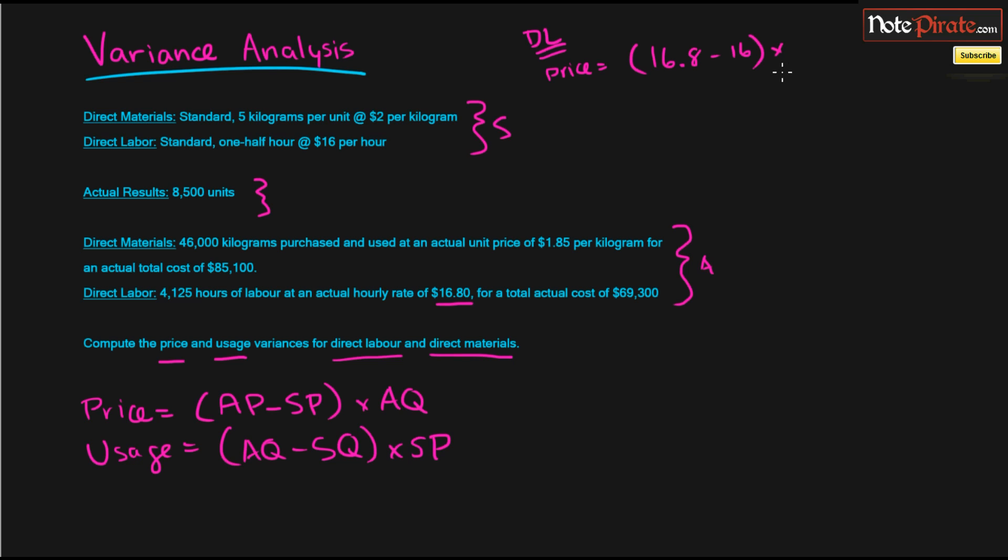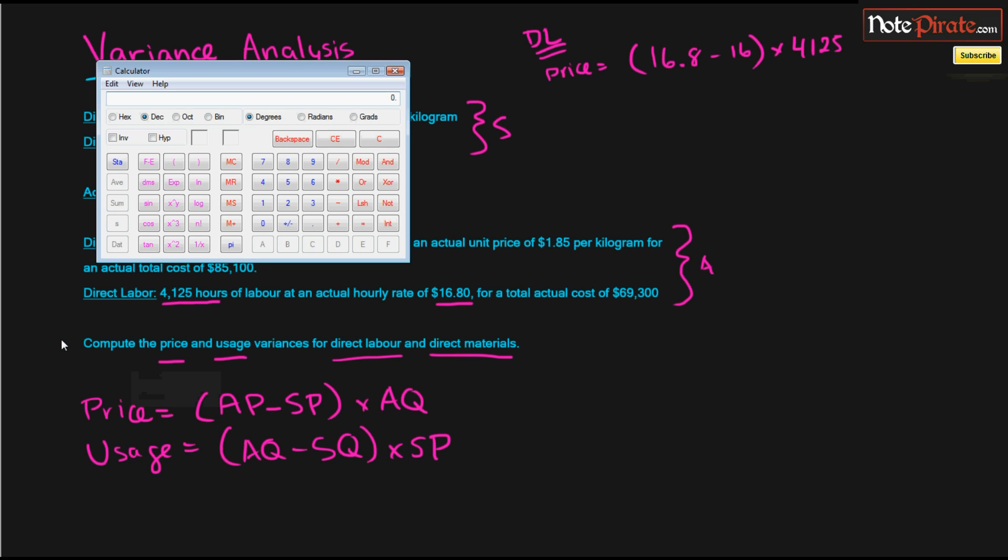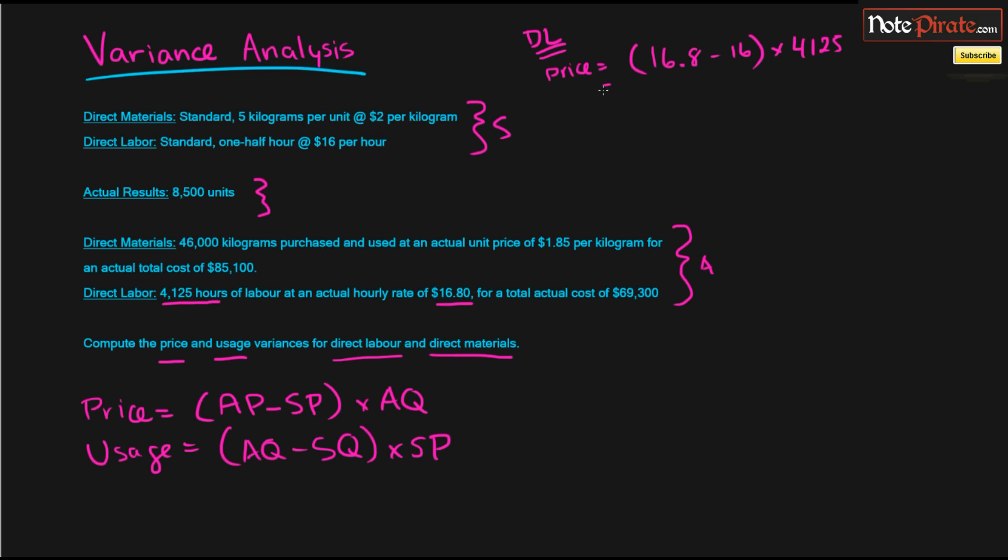That gives us a difference of $0.80 for every hour of labor. And our actual quantity of labor is represented right here, 4,125 hours, and if we calculate that, we get a difference of $0.80 times 4,125, which is going to be a variance of $3,300. And since our actual dollar per hour is greater than what our standard amount is, this is going to be an unfavorable variance.